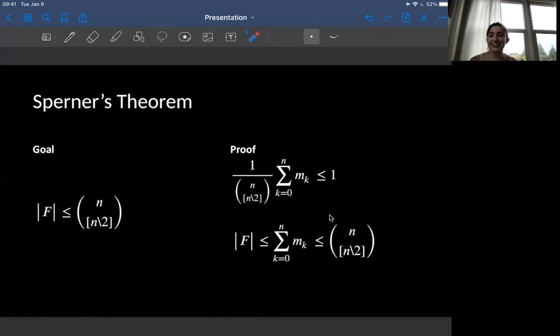Now, this is the trickiest part I thought for me personally, is that there's a one so we can multiply it, bring it to the other side, so that we can have that. That from zero to n, all the sets, all of the k sets have the maximum at n choose n over 2.